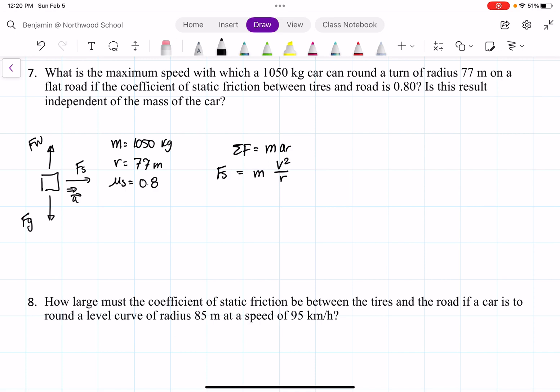So we can plug in mu s times f n is equal to m v squared over r. Now we can't get any further because we don't know the normal force, so let's look in the y direction.